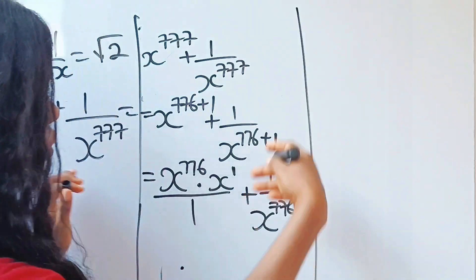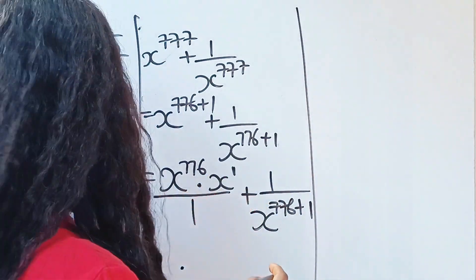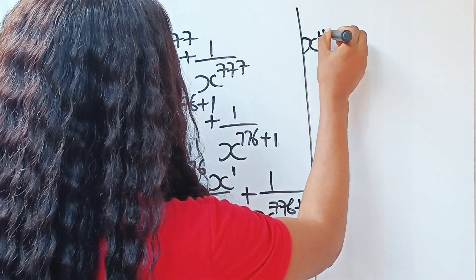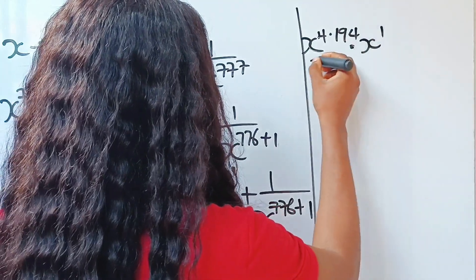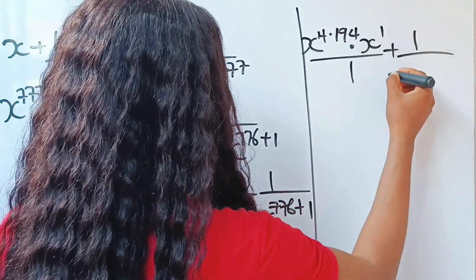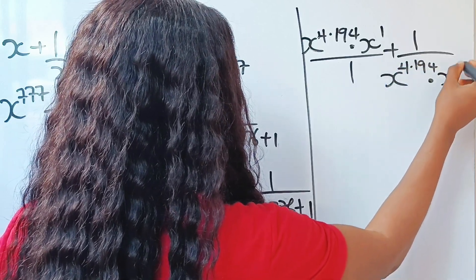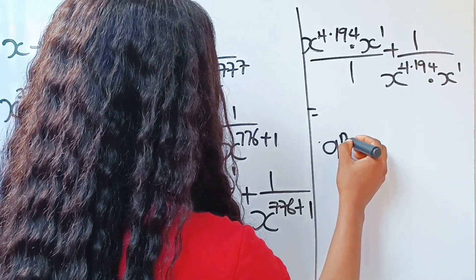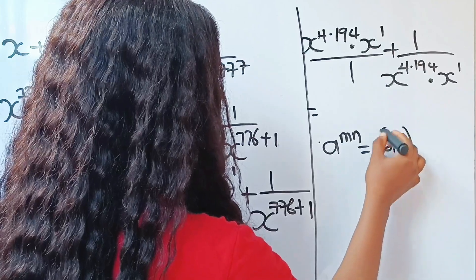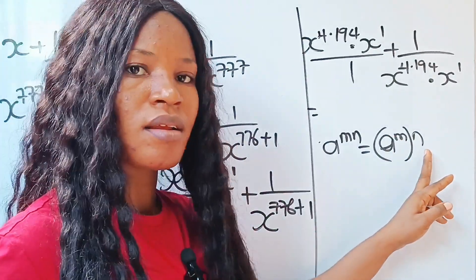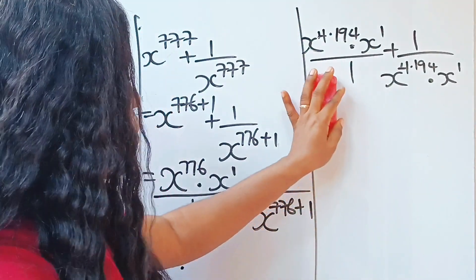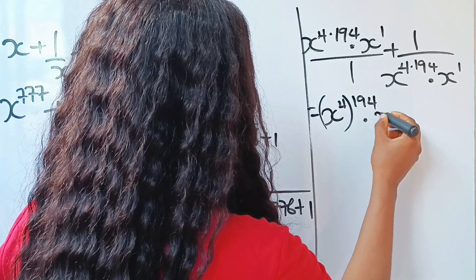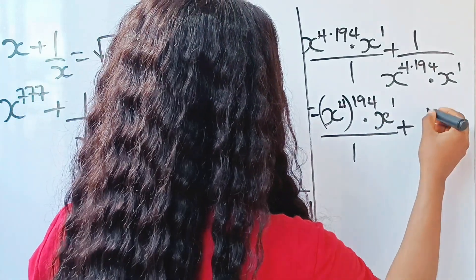Now let's simplify the exponent 776. We note that 776 equals 4 times 194, so x to the power of 776 is x to the power of 4 times 194. Using the rule that a to the power of m times n equals (aᵐ)ⁿ, we can write this as x to the power of 4, raised to the power of 194, multiplied by x to the power of 1, and similarly for the denominator term.